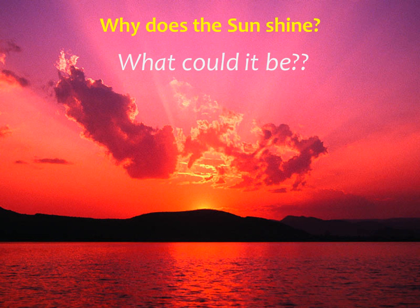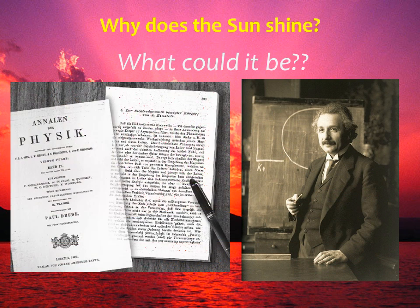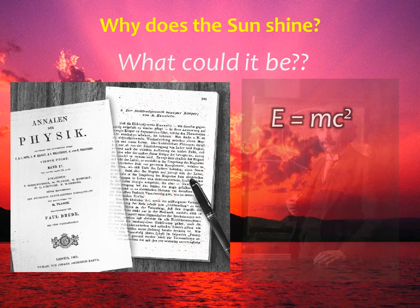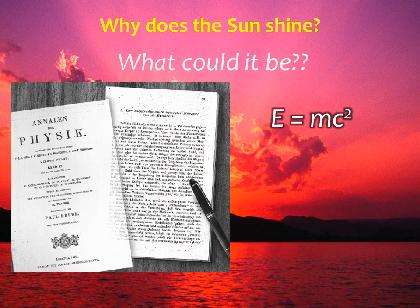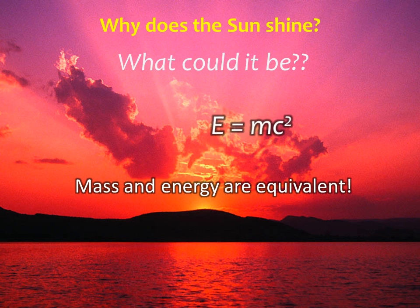That explanation came with Einstein's publication of his special theory of relativity in 1905. Einstein's theory included his famous discovery of E equals MC squared. This equation tells us that mass itself contains an enormous amount of potential energy.